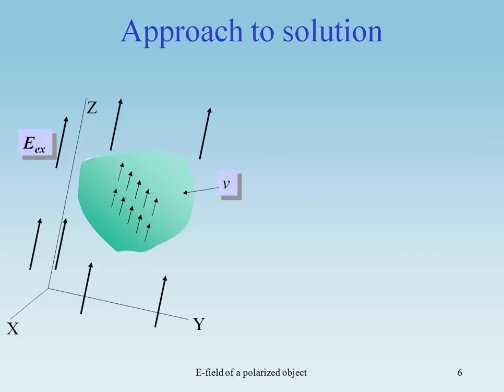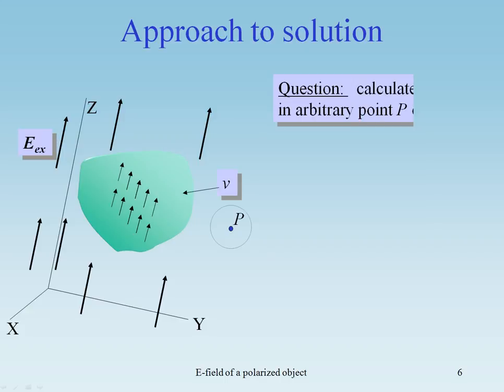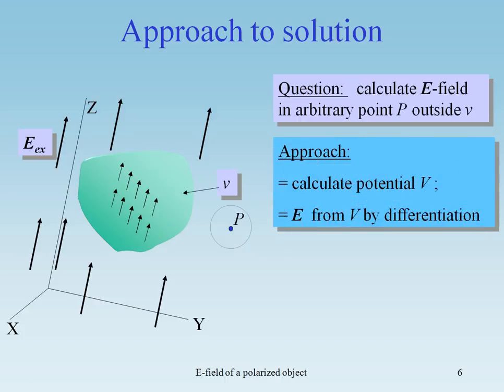Approach to the solution. The question is: calculate the electric field in an arbitrary point outside V. The approach: first, we calculate the potential, and from the potential, by differentiation — taking the gradient — we calculate E.